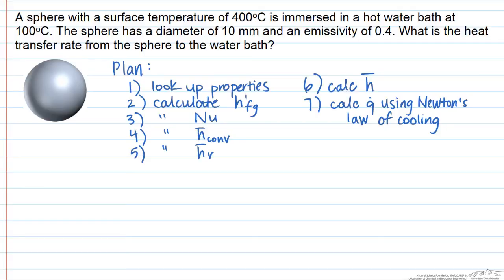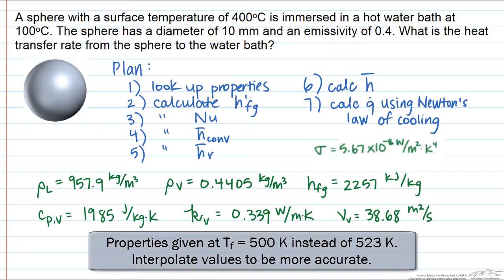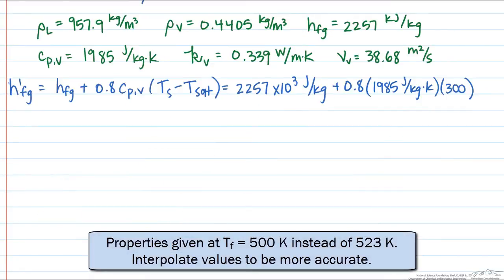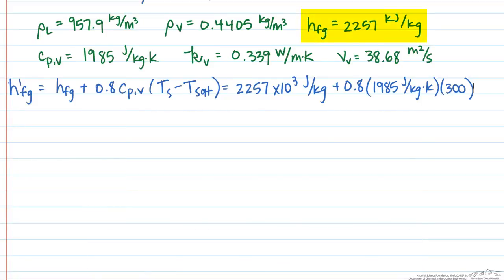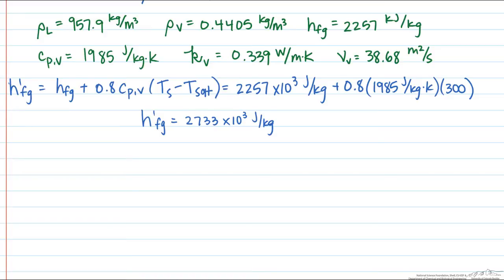Let's start by looking up the properties. One thing to be really careful of is units, because the heat of vaporization is given in kilojoules per kilogram, and everything else is in joules per kilogram. So h_fg equals 2257 times 10 to the third joules per kilogram, and the corrected latent heat equals 2733 times 10 to the third joules per kilogram.